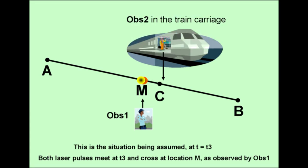Here is the situation assumed at time instance T3, later than time instance T2. Both laser pulses arrive in location M and are observed by OBS-1.